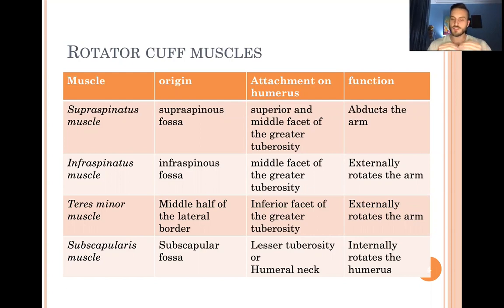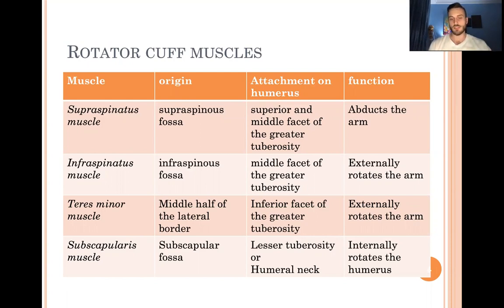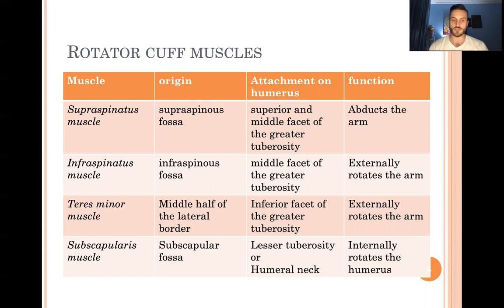The infraspinatus is in the infraspinous fossa and attaches to the middle facet of the greater tuberosity; its function is external rotation. Another external rotator is teres minor, which originates from the middle half of the lateral border and attaches to the inferior facet of the greater tuberosity. So: supraspinatus abducts, infraspinatus and teres minor externally rotate, and subscapularis — in the subscapular fossa — is the internal rotator of the arm.